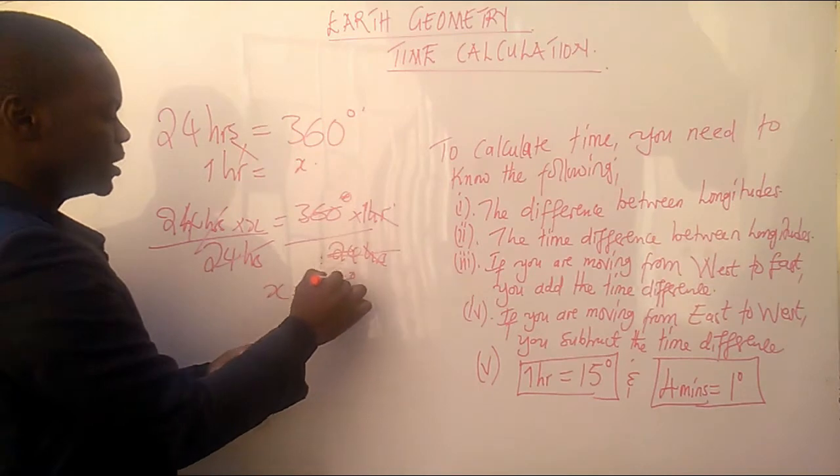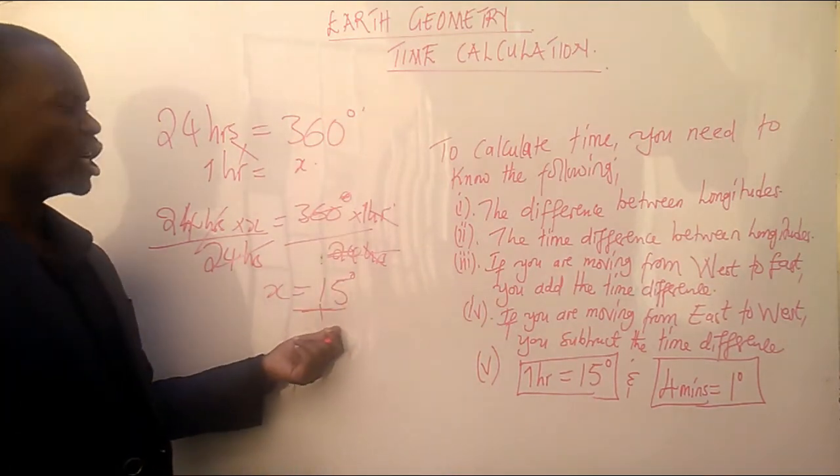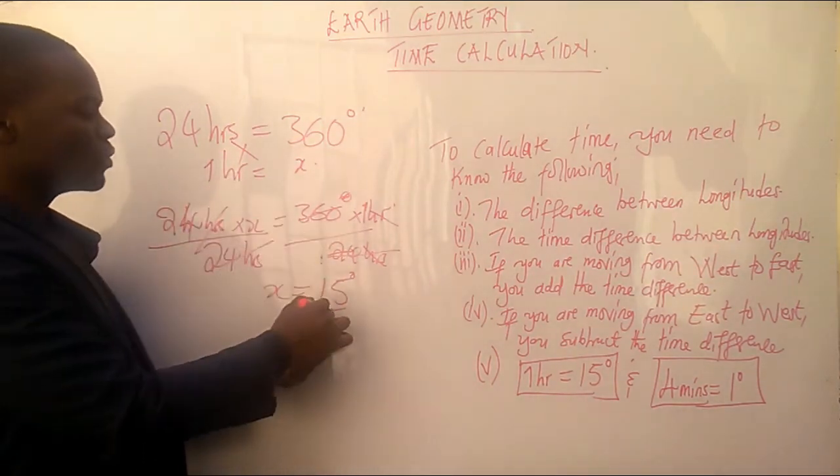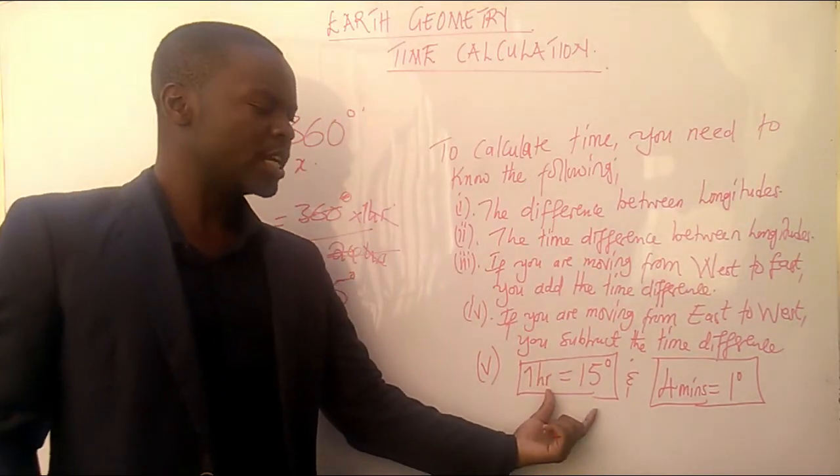And then hour and hour will go. Remember that we have got a degree, which is this degree. So, our x is 15 degrees. So, meaning that 1 hour is equal to 15 degrees, which is this relationship here.